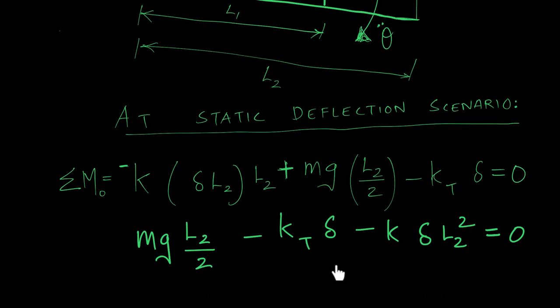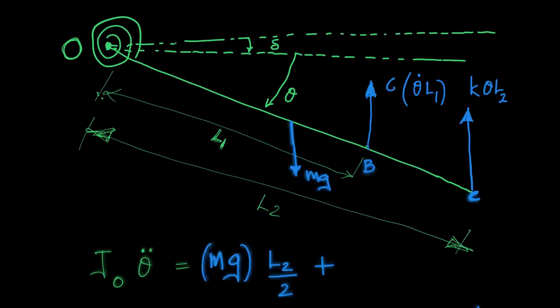If Delta is the static deflection in radians, this expression shows how the geometric and stiffness parameters relate to the static deflection. Now let's derive the differential equation governing the motion. Theta is defined from the static (equilibrium) position — this is a single degree of freedom system because knowing theta completely defines the state of the system.